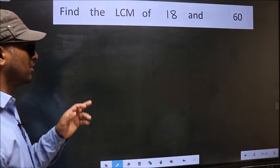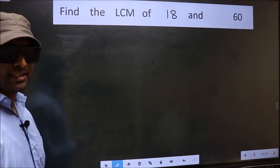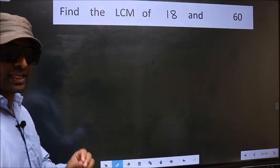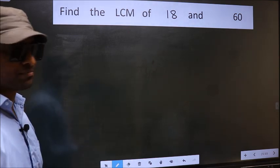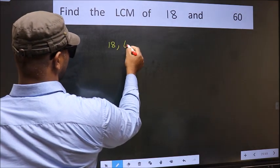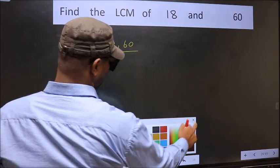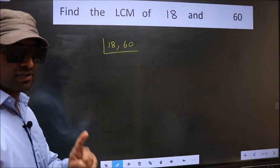Find the LCM of 18 and 60. To find the LCM, first we should frame it in this way: 18, 60. This is your step 1.